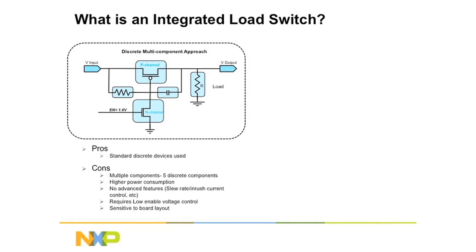So what is an integrated load switch? A load switch is a way for a low-power electronic device to turn on a high-current device — a way for a microcontroller to switch on a big motor, a light bulb, or something which consumes current. The traditional way of doing this is by using a number of FETs, a couple resistors, a capacitor or two, hooked up the right way — you have built a load switch.